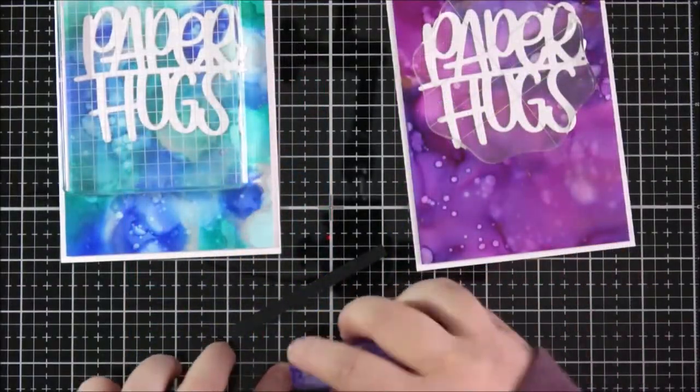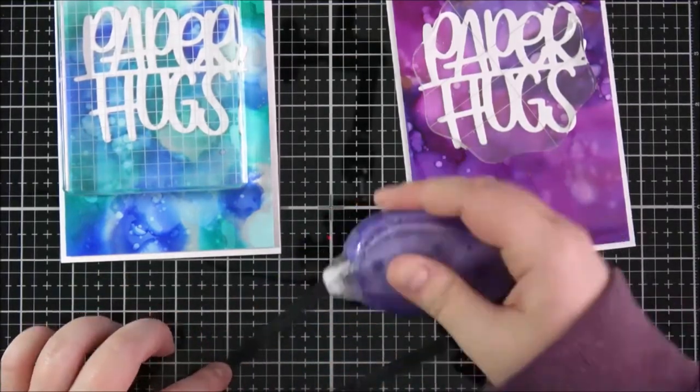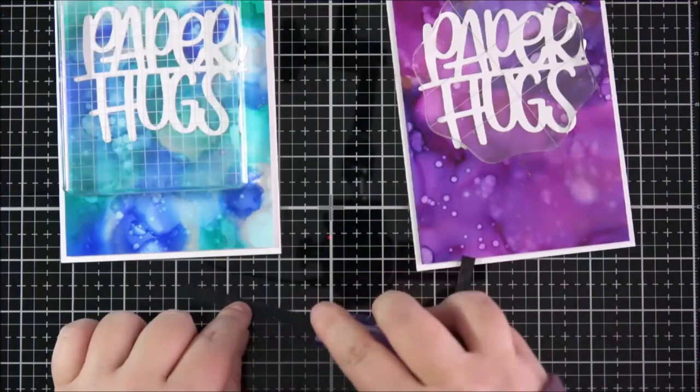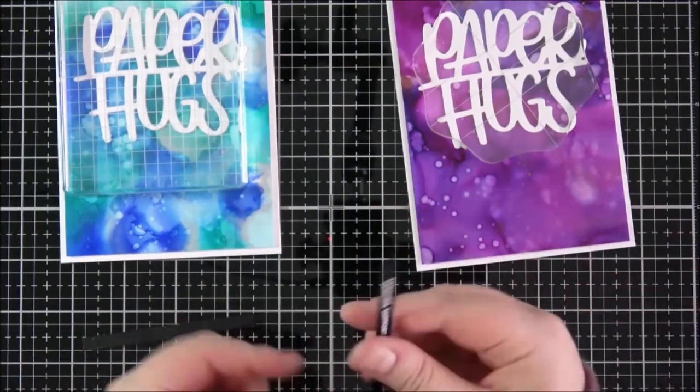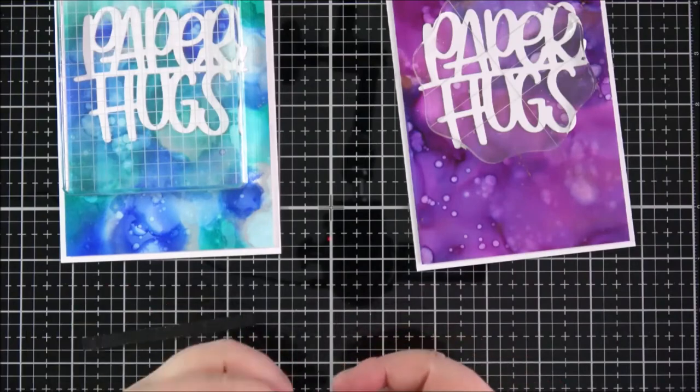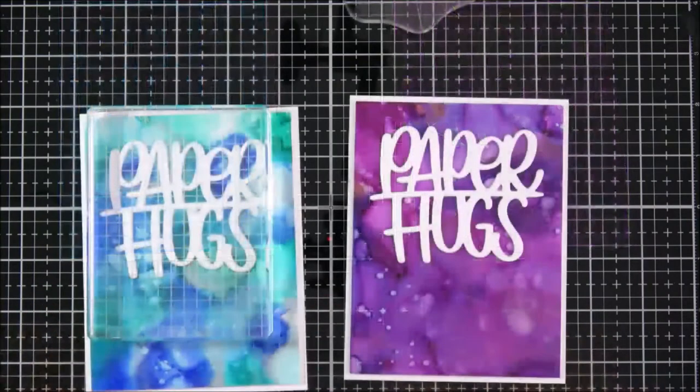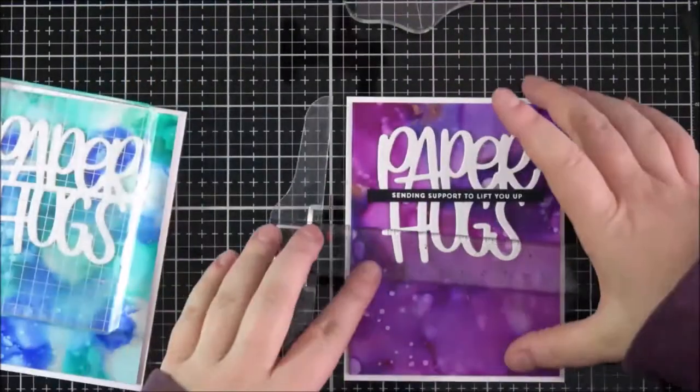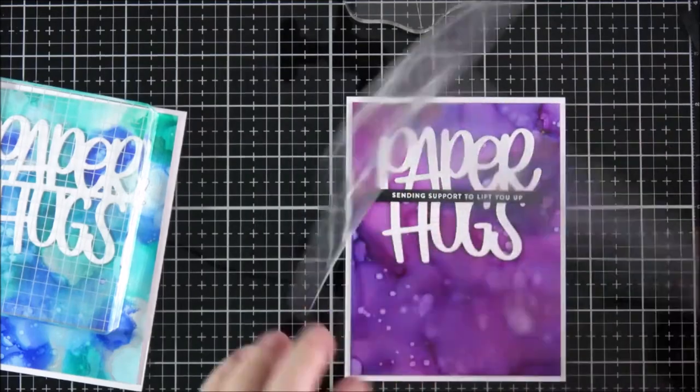And then I can add some tape runner onto the back of my sentiment strips. Like I said I just cut these sides down a little bit. I wanted to cover that line in between the paper and the hug so I wanted them to be long enough for that but I didn't want them to go across the whole of the card. So just removing any of the excess glue there and then I can just use a t-square ruler just to help me make sure that that's straight.